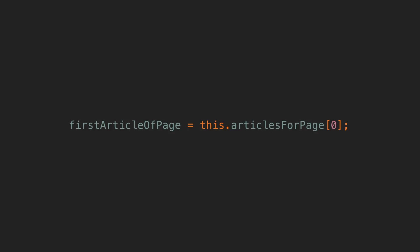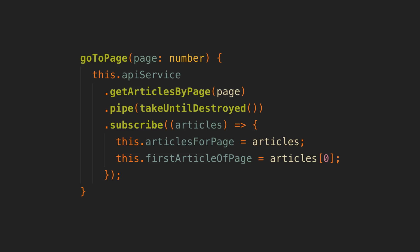Not only that, but now we can no longer react to articles-for-page changing. This code will only run once for the initial value of articles-for-page. If we want to make sure it updates properly then we need to make sure to manually recalculate it every time articles-for-page changes, and things like this are easily forgotten. That is in a nutshell why we want to avoid subscribes when coding reactively and declaratively.